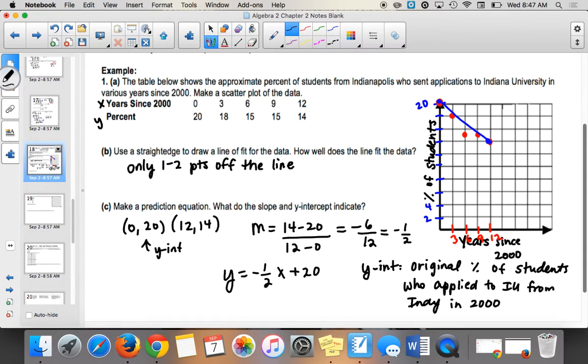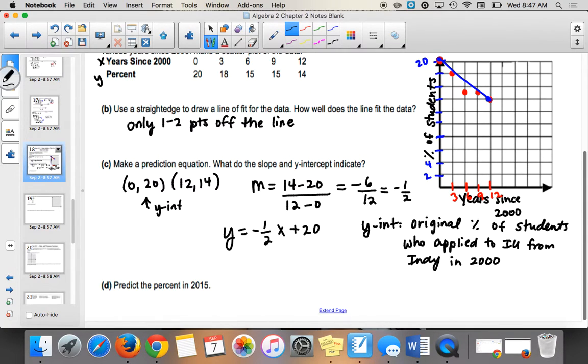How about the negative 1 half? What does that represent? Yeah, so it's like the rate of decrease. So we're decreasing by negative 1 half every single year. So that is the rate of decrease.